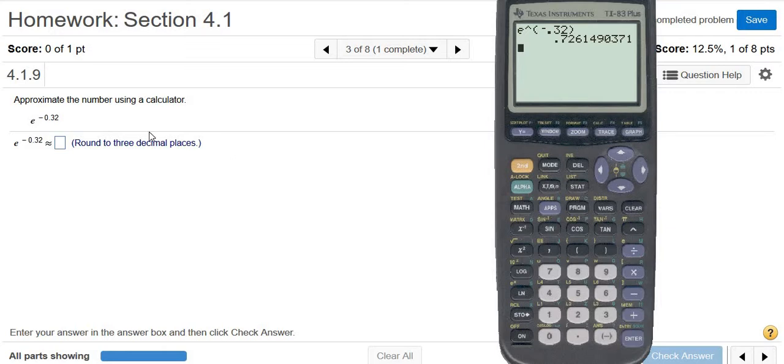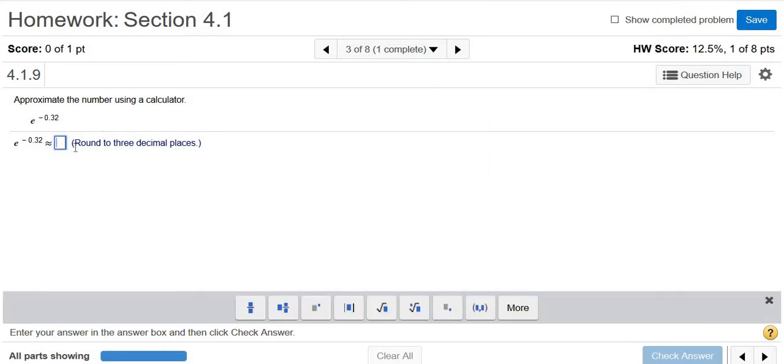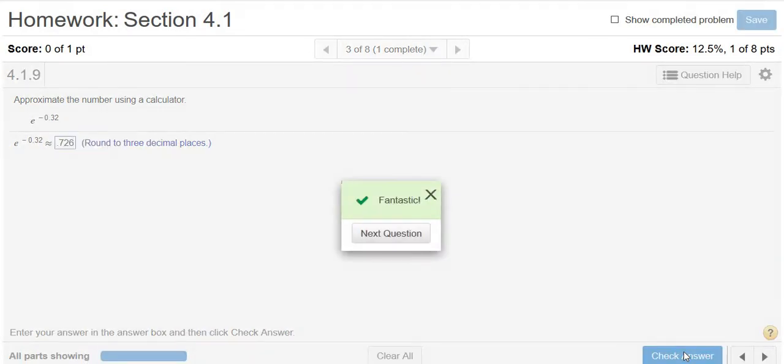So it wants 3 decimals. So that would be 0.726. Let's try it. 0.726. And that's it. Hope that helped.